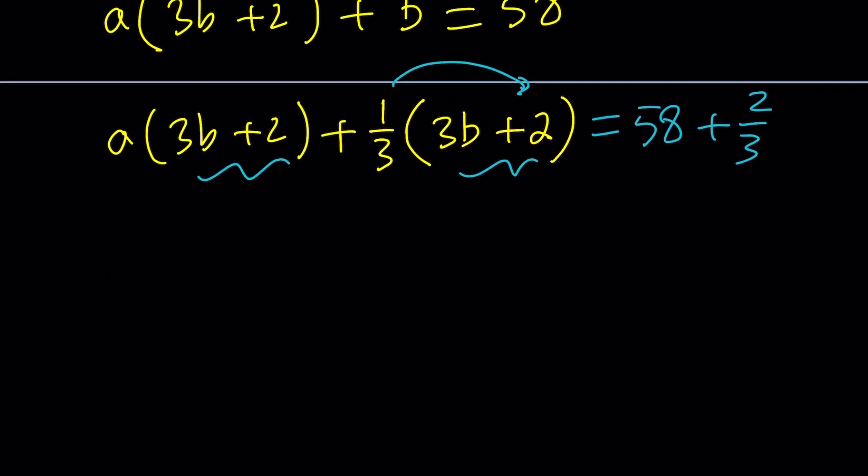Let's go ahead and take out 3b plus 2 as a common factor. And the other factor is going to be kind of weird, but that's okay. We're going to fix it. a plus one-third, and that's equal to 58 plus two-thirds. I mean, at this point, you're more than welcome to make a common denominator, simplify this, but you're not going to have to do it. Because the next thing we're going to do is actually going to take care of this stuff. And what is that? The fractions.